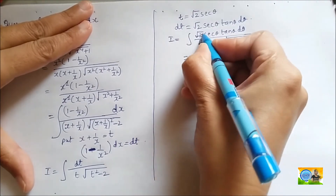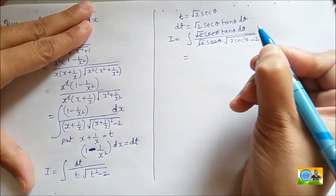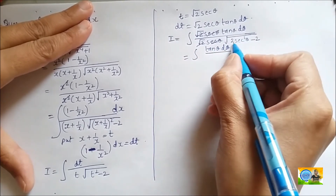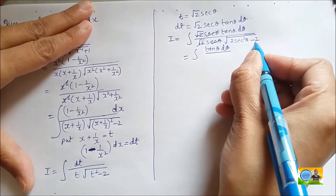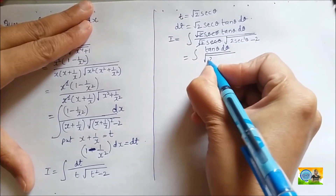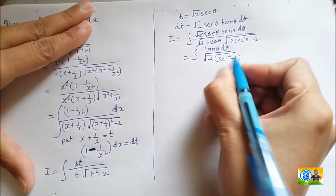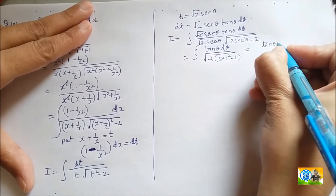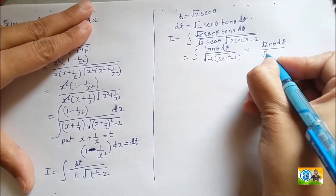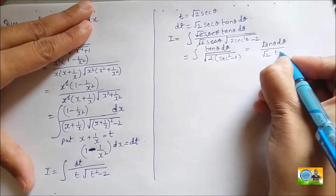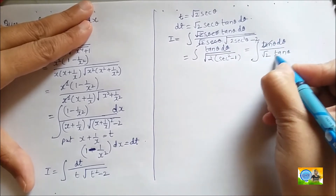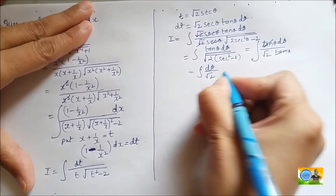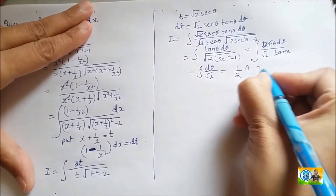Simplifying, the √2 and √2 cancel, and sec θ and sec θ cancel. I am left with tan θ dθ in the numerator. In the denominator, taking √2 out, I have √(sec²θ - 1), which equals tan θ. So tan θ and tan θ cancel, and I am left with the integral of dθ divided by √2. This gives (1/√2) θ + c.